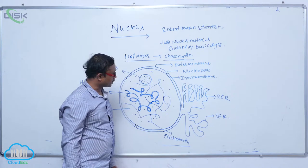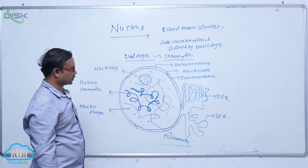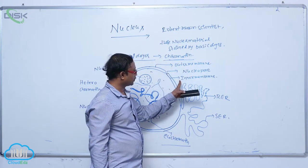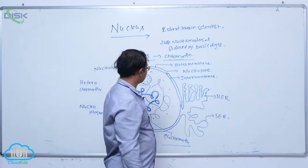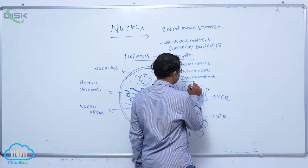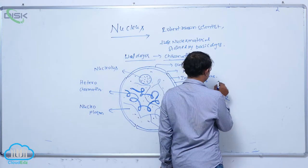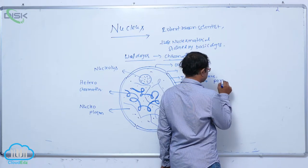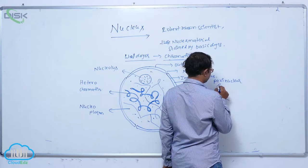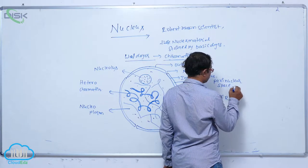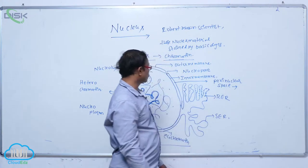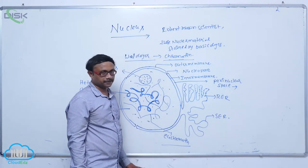The nucleus is generally a double membrane structure — it has an outer membrane and an inner membrane. The space between the outer membrane and inner membrane is known as the perinuclear space.